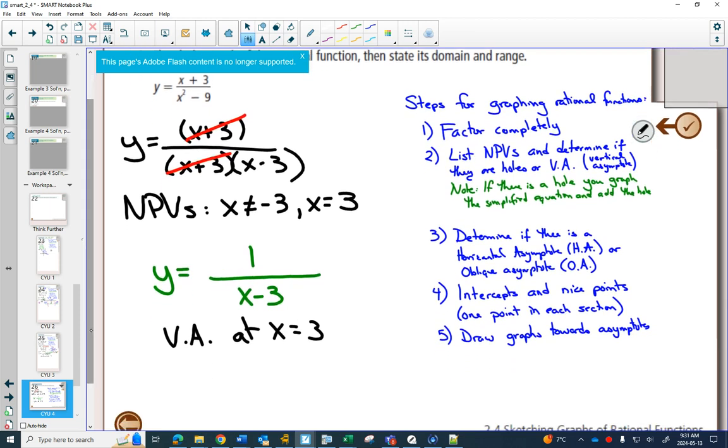But the other one that went away is going to give you a hole at minus 3. And we have to find the y-coordinate of the hole. And we find the y-coordinate using our new, here's our simplified equation in the green box. I plug my minus 3 into that. And I'm going to get negative 1/6.